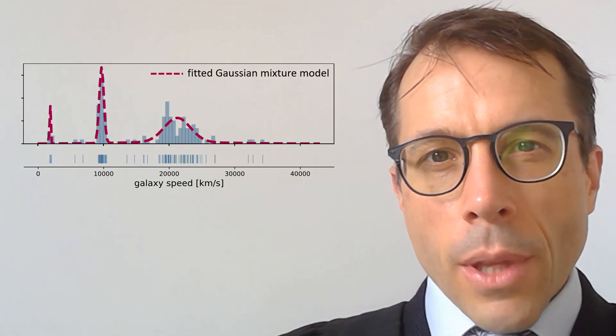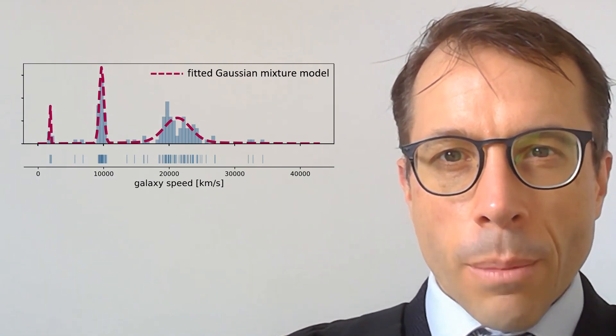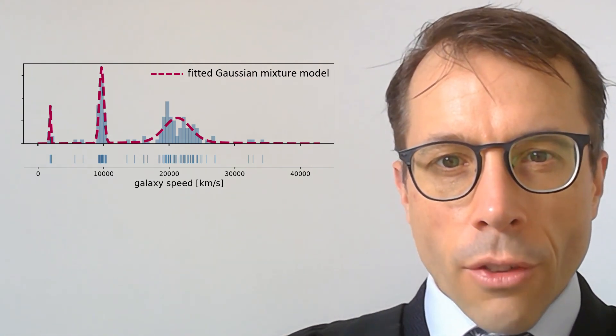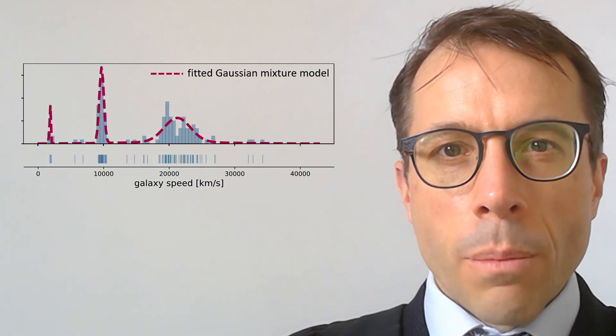Or maybe there are four. Maybe that third Gaussian component should actually be split into two. The question is how far can we go at improving the fit?